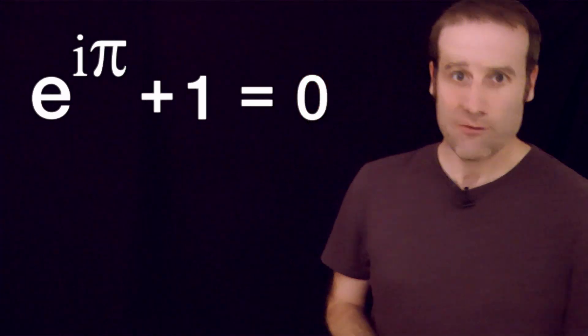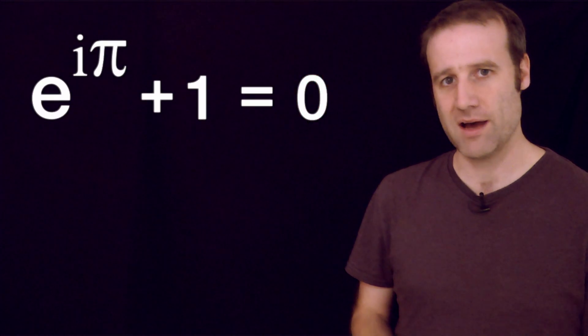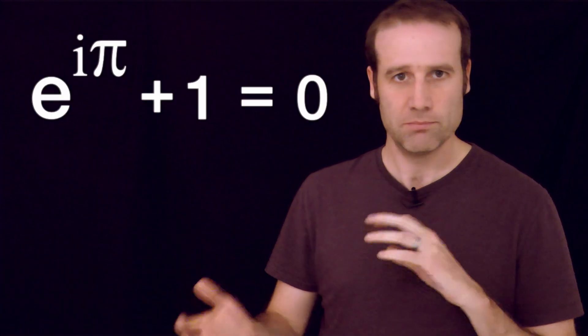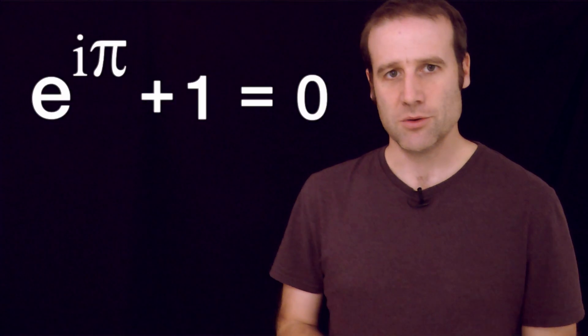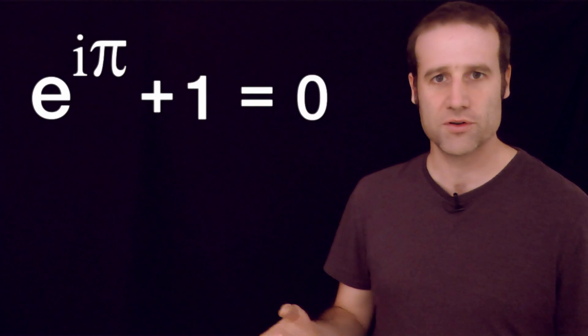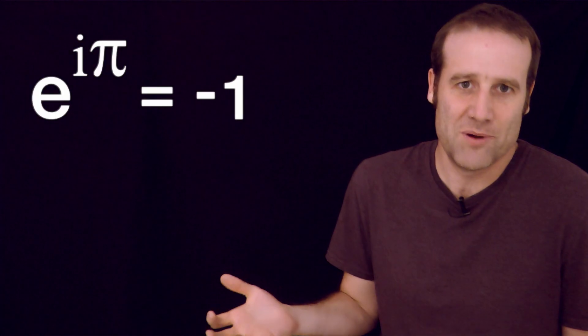What is i to the power of i? Before we look at that, I want to have a quick look at Euler's identity. Everyone gets very excited about e to the i pi, or pi i, whichever way around you want to do it, plus 1 equals 0. We can rearrange that a little bit.